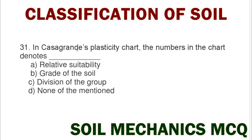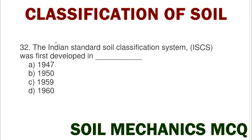Next question: in the Casagrande plasticity chart, the numbers in the chart denote option A relative suitability, option B grade of soil, option C division of the group, option D none of mentioned. The correct answer is option A relative suitability.